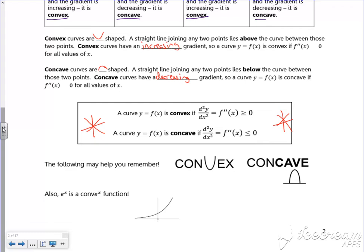So you can kind of remember the convex because it looks like v in convex and the concave looks like a k. You can also say that e to the x is convex, so there are different ways of remembering.